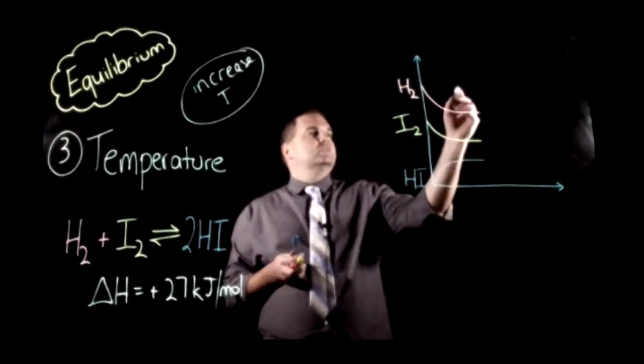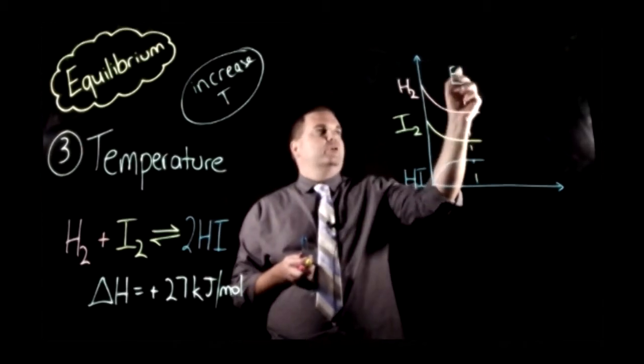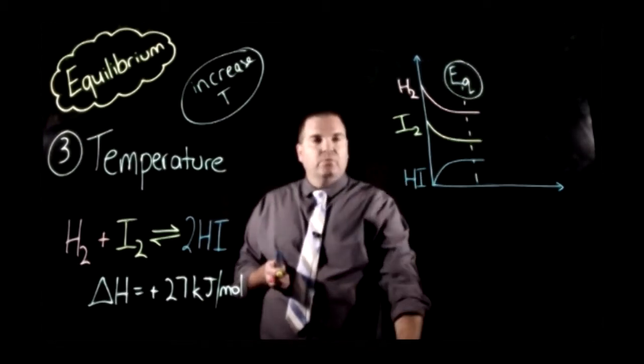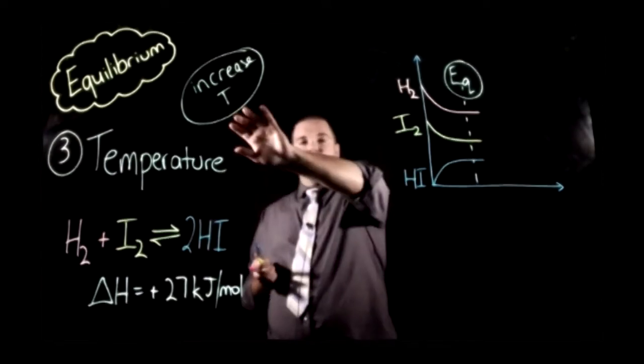We get to a point where slopes of all of them are zero, so what we have done is establish equilibrium. Once we've established equilibrium, we're going to introduce our change. So in this case, what we're going to do is increase the temperature.